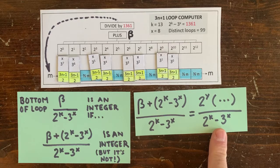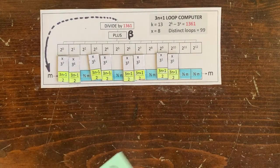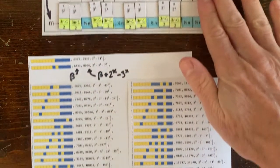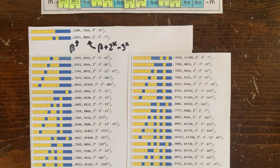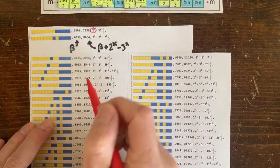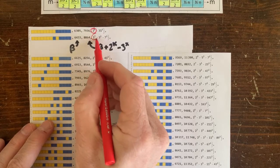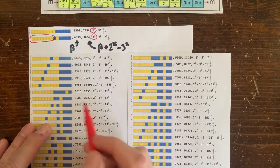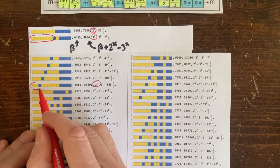So here's some of the beta plus 1361 values. For the circuit loop, we can cross off 2 to the 8th, which is plenty. And for the rest of these loops, look, we can cross off 2 to the y, where y is the number of initial up moves. That's pretty cool.